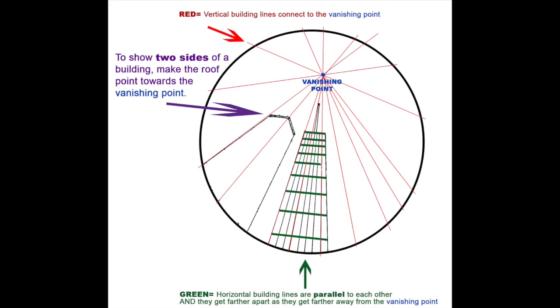If you want to show two sides of a building, you're going to need to use three of those guidelines that connect to your vanishing point, and then notice how the top of the building looks like an arrow pointing towards the vanishing point.